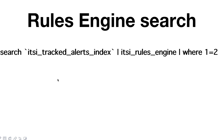The Rules Engine search is a real-time search that continuously runs, taking events from the itsi_tracked_alert index — these are notable events such as high CPU or memory utilization. Not every event goes to the ITSI Rules Engine; it performs grouping, creates episodes, and does everything required to bring similar events together.